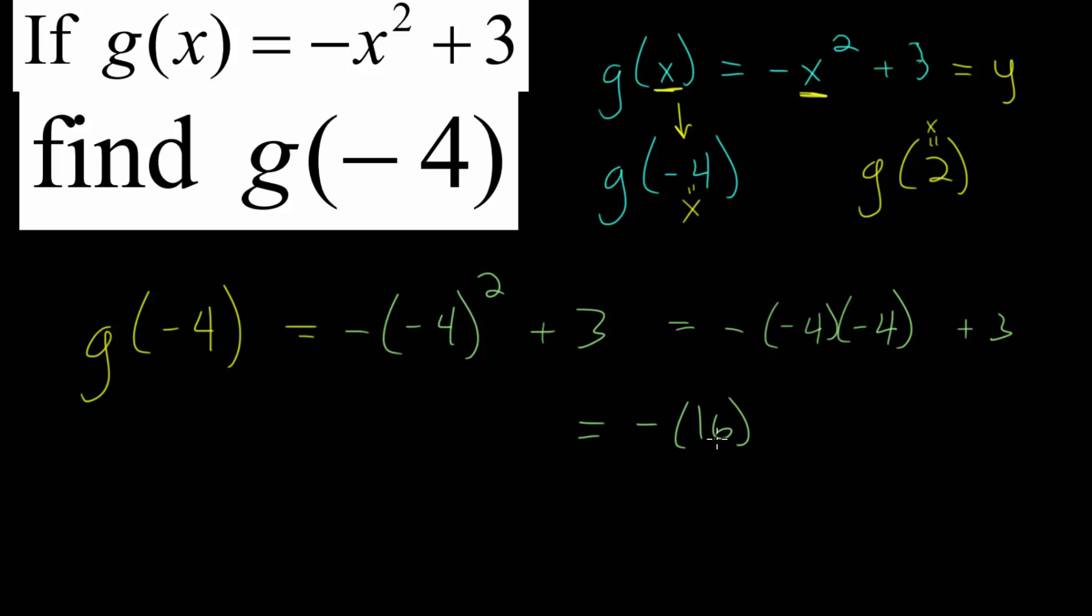Minus 4 times minus 4 is positive 16. So these simplify to positive 16. And then we will take its opposite. So we have minus 16 plus 3. And this simplifies to negative 13. So this right here should be our final answer.